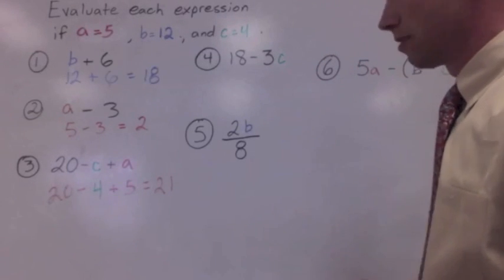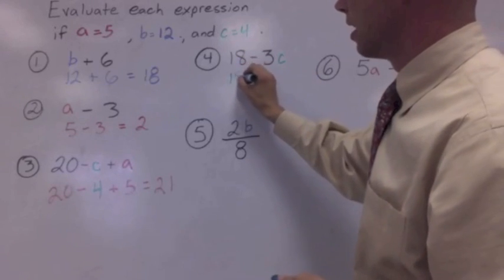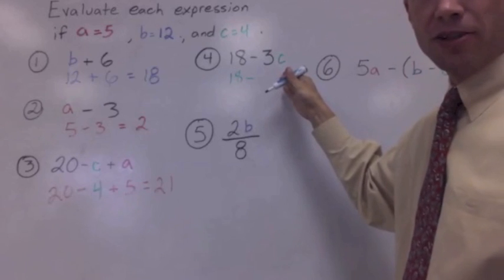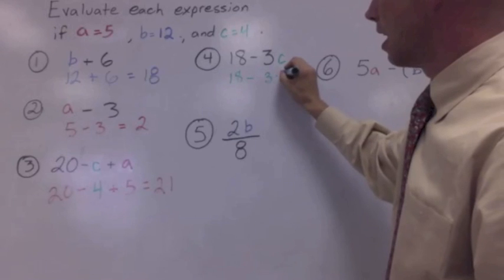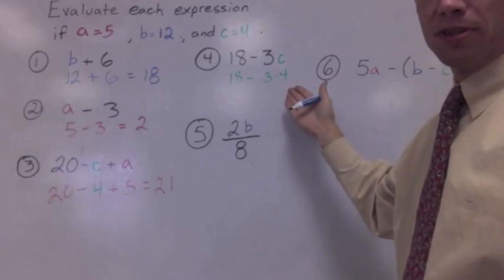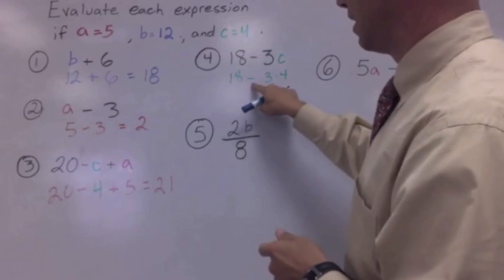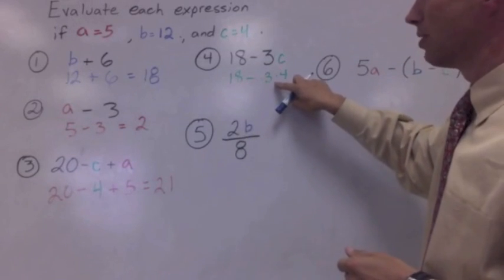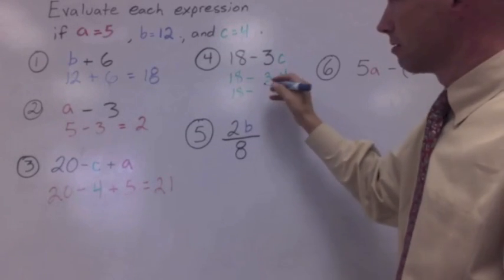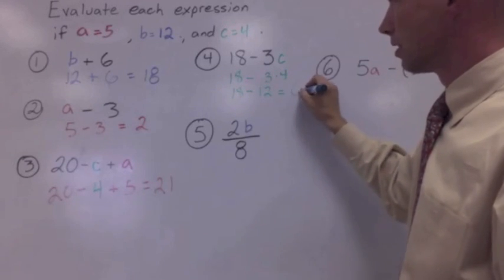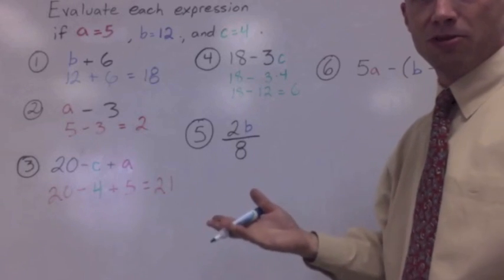Number four, 18 minus three C. 18 is the same. Three C, you remember from sixth grade, just means three times C. We know C is four, so we're going to write three times four. You can write this with the dot, with the parentheses, or with the x sign, although we don't use that much in the algebra world. So 18 minus three times four. 18 minus whatever three times four is. That's 12. 18 minus 12 is six. You have to do the multiplication before you do the subtraction. That's just the order of operations that we use in the math world.